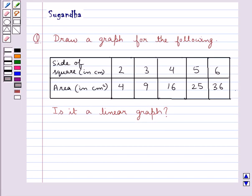Hello and welcome to the session. Today I will help you with the following question. The question says, draw a graph for the following. Is it a linear graph? In the table given to us, we are given the side of the square and the area of the square, and we have to display this information on the graph.